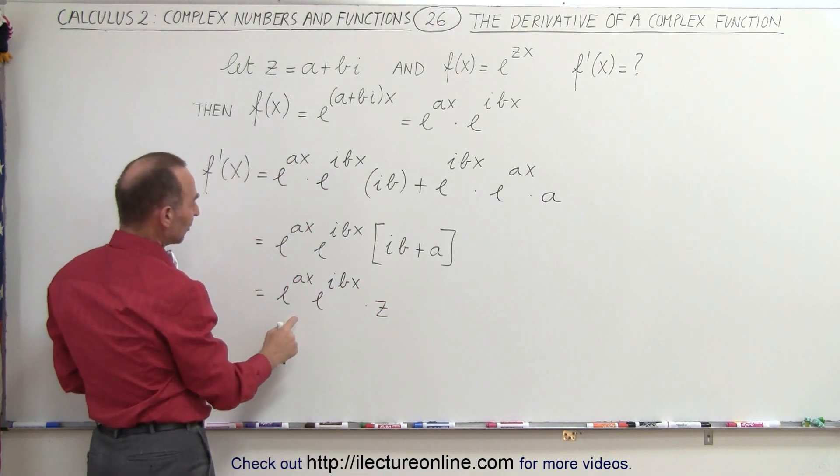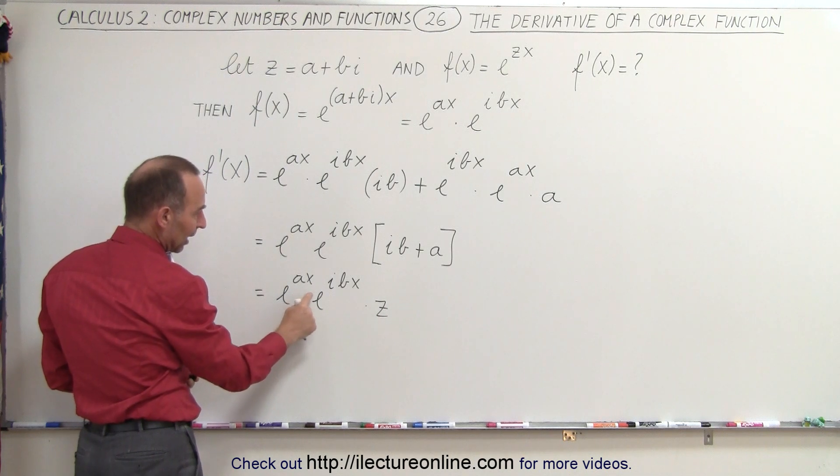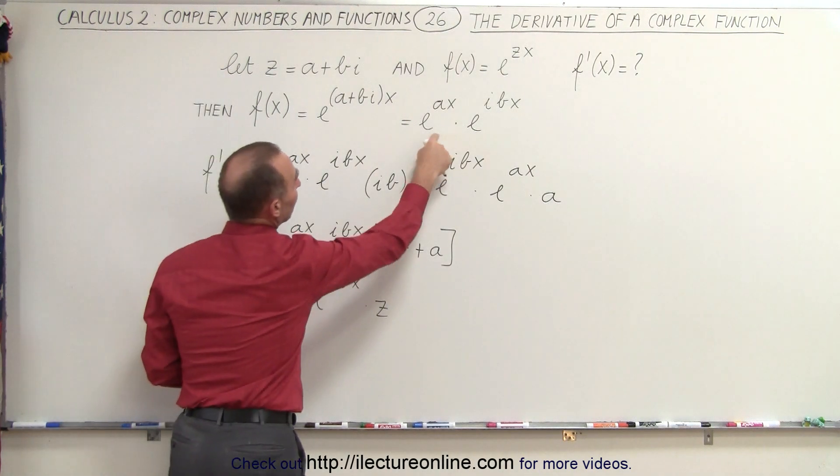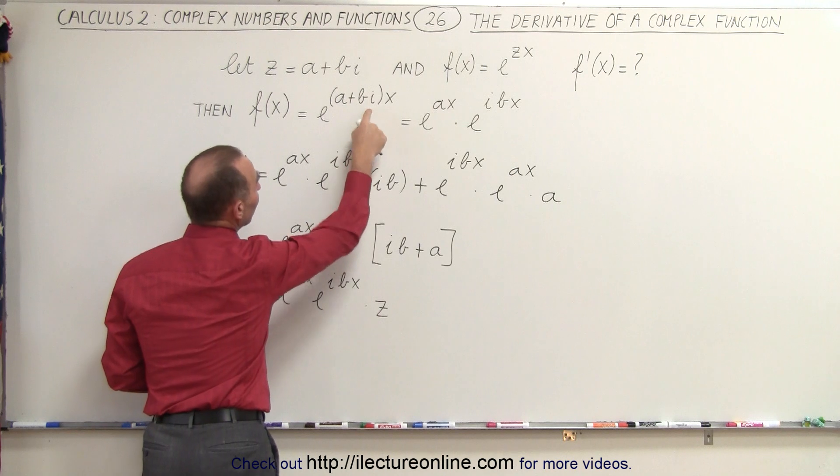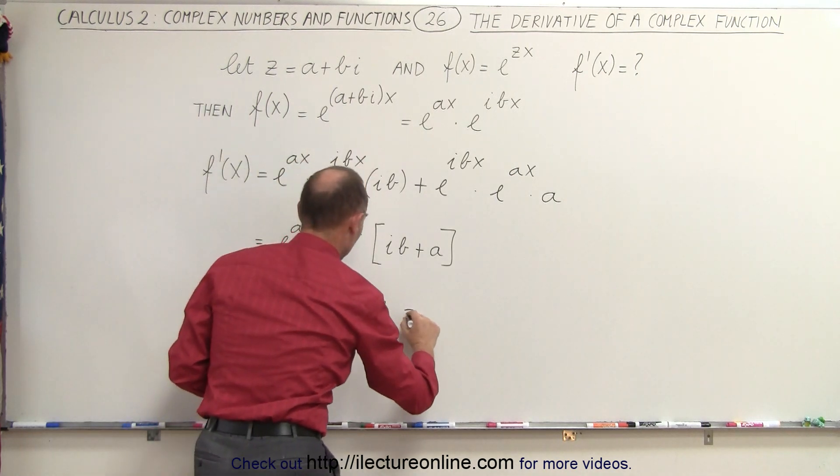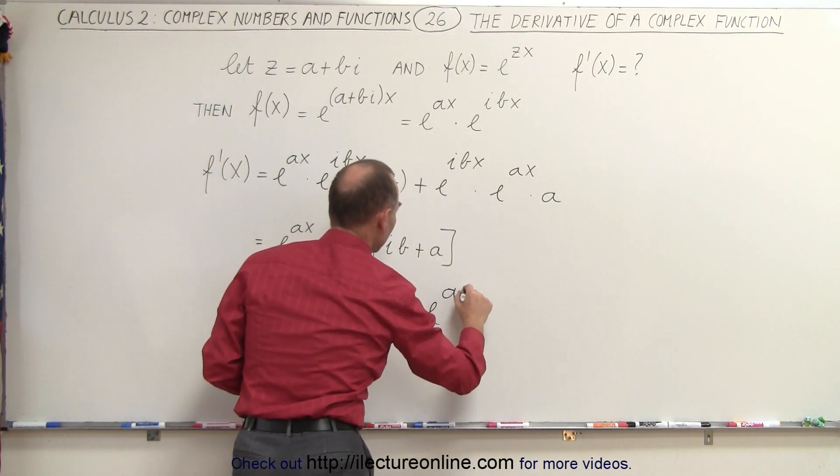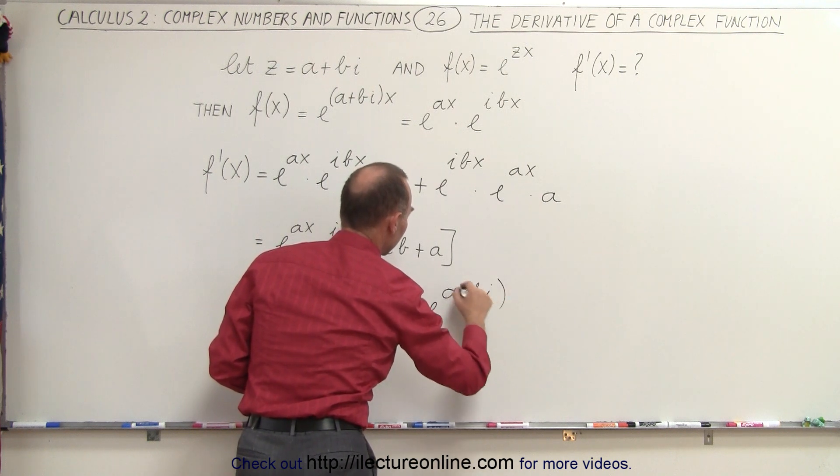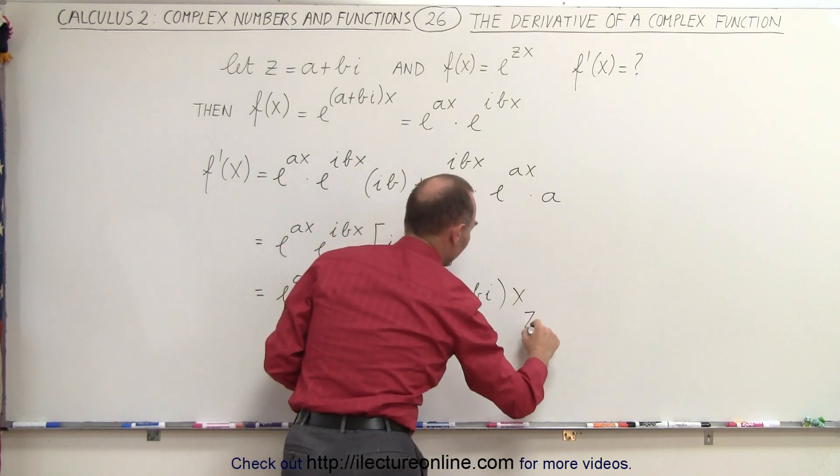But then when you realize that the product of e to the ax and e to the ibx right here can be written as e to the a plus bix. So this can be written as e to the a plus bix times z.